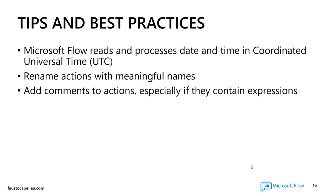Another best practice I suggest is whenever you add an action to a flow, always rename the actions with meaningful names. This would be a lifesaver down the road — if you build a flow and don't access it for three or six months, once you go back into it you can read the functions and tell what each one does. In addition to renaming actions with meaningful names, I also suggest adding comments to the actions, especially if they contain expressions. This is just to make life easier for you or anybody else who has to work with these flows down the road.